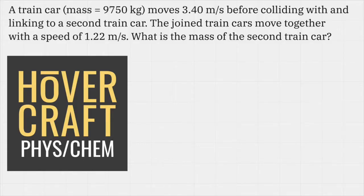A train car with a mass of 9750 kilograms moves 3.40 meters per second before colliding with and linking to a second train car. The joined train cars move together with a speed of 1.22 meters per second. What is the mass of the second train car?